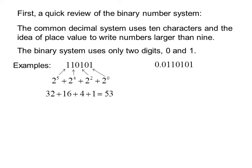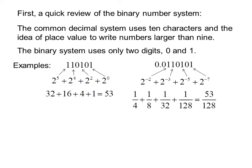A binary decimal such as 0.1101010 1 would be 2 to the negative 2 plus 2 to the negative 3 plus 2 to the negative 5 plus 2 to the negative 7, or 1 fourth plus 1 eighth plus 1 thirty-second plus 1 one-hundred-twenty-eighth.